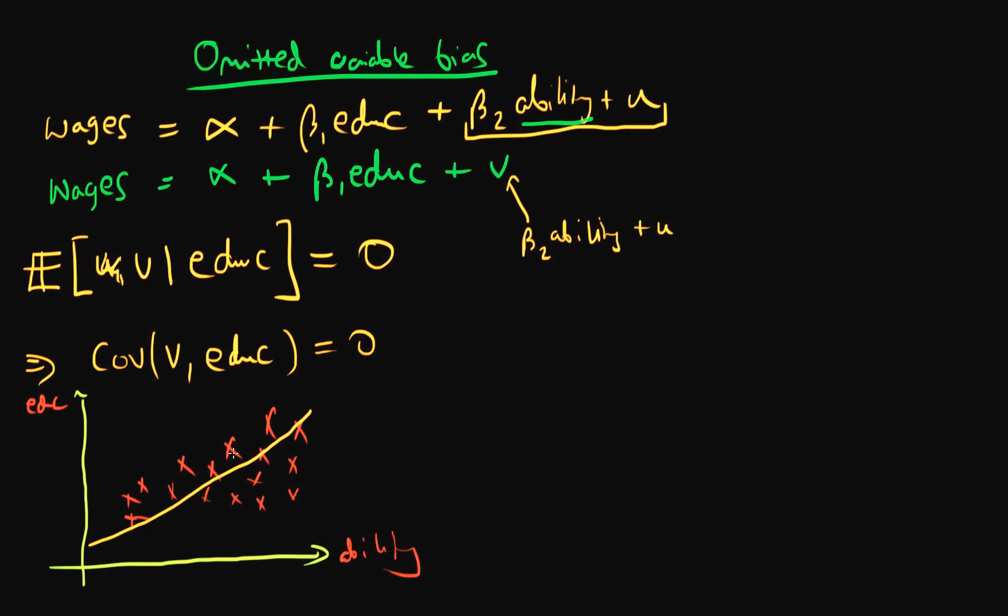So there is some positive correlation between these two variables. Note that it's not exact, but there is some positive correlation between the two variables. And because of that, that means that the covariance between v, which contains ability, so when you see v here, read ability, and education does not equal zero.